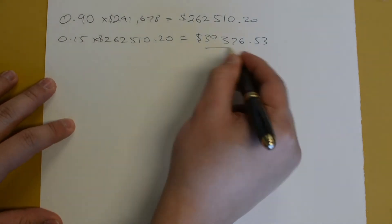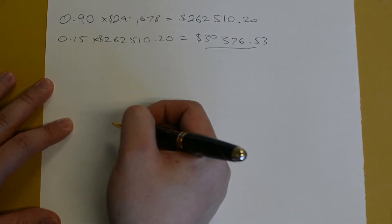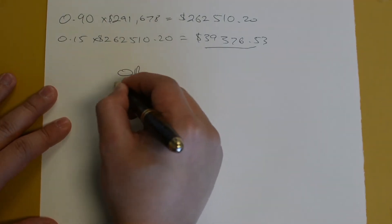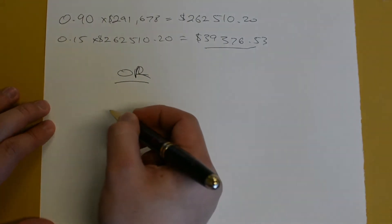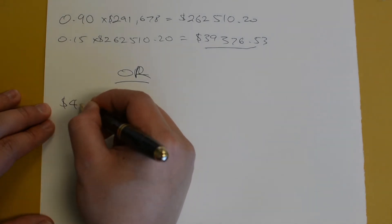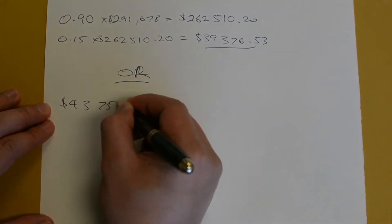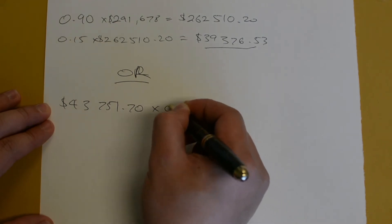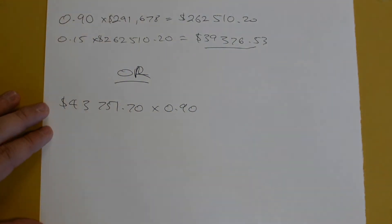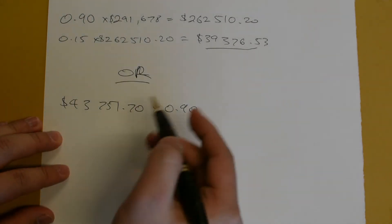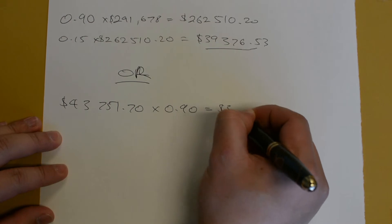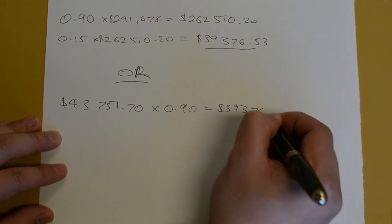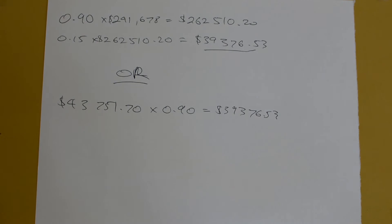So that's how much he would have earned with a 10% discount on his book. Another method would be to take what he earned last time — $43,751.70 — and find 90% of this, because a 10% discount on the sales price means a 10% discount on your royalty, and this transfers over. Finding 90% of it also gives you $39,376.53. So those are two ways of finding this.